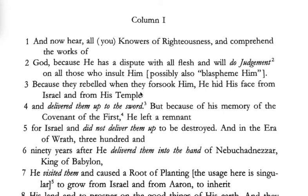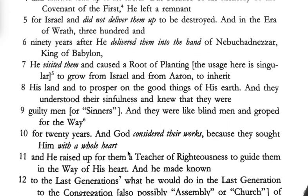We also know that when Paul went after the apostles, the early assembly, he went to Damascus after them — so there is this association between Damascus and the early believers. The text continues: 'In the era of wrath, 390 years after he delivered them into the hand of Nebuchadnezzar king of Babylon, he visited them and caused a root of planting to grow from Israel and from Aaron, to inherit his land and to prosper on the good things of his earth.'